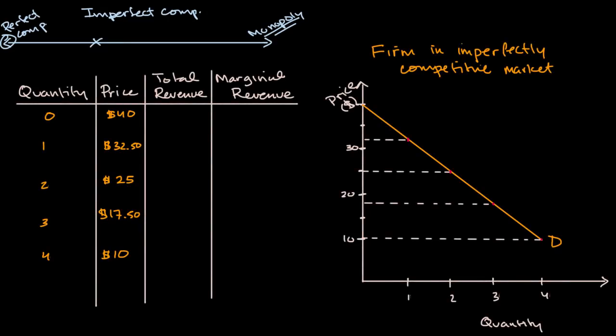So right over here, I have a very simple model of a demand curve for a firm in an imperfectly competitive market. And you can see here that the more that that firm produces of its goods, the lower a price it can get for that good. And we can see very clearly, this is a classic downward sloping demand curve.